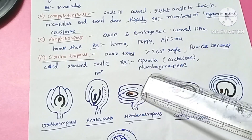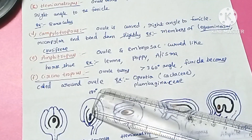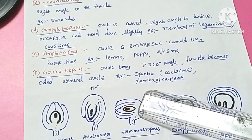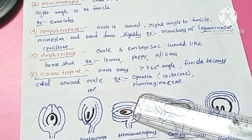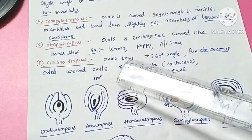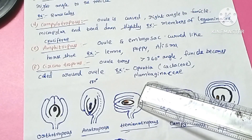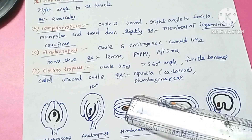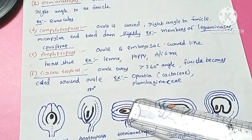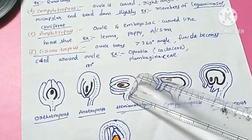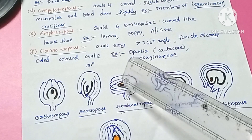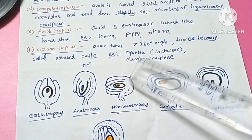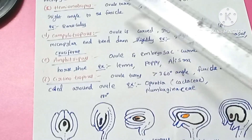The third type is the hemianatropous ovule. While the anatropous ovule is turned 180 degrees, the hemianatropous ovule is turned only 90 degrees. So the body of the ovule is at a right angle to the funicle. The example for hemianatropous ovule is Ranunculus.